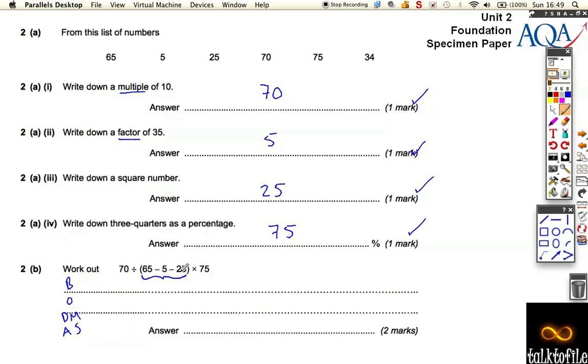So really we're doing 70 divided by 35 times by 75.